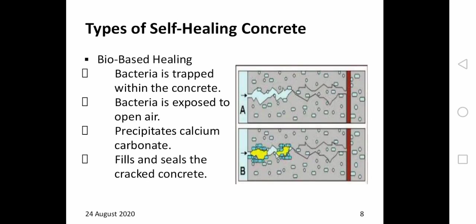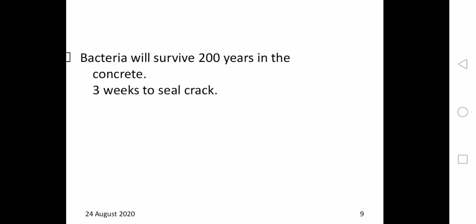The third type of self-healing concrete is bio-based healing concrete. In bio-based healing concrete, bacteria are incorporated into the cement paste during mixing, along with an inorganic nutrient called calcium lactate. The bacteria undergo a metabolic process inducing a precipitation of calcium carbonate in the form of limestone. This precipitation builds up and acts as an effective barrier, shielding the crack from further deterioration. In bio-based healing concrete, the bacteria will survive 200 years in the concrete, and it takes three weeks to seal the cracks.